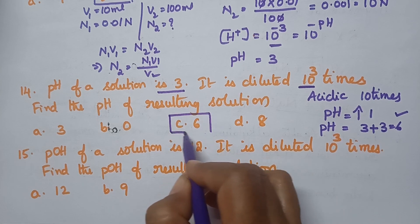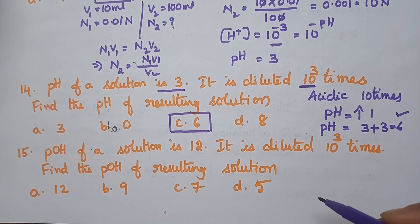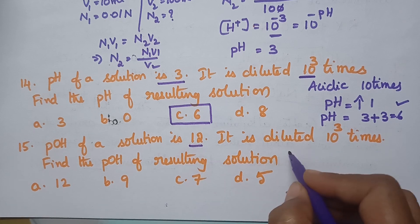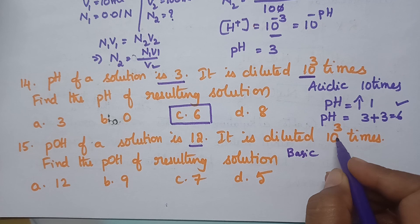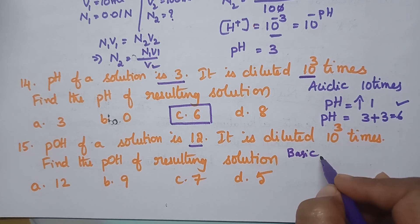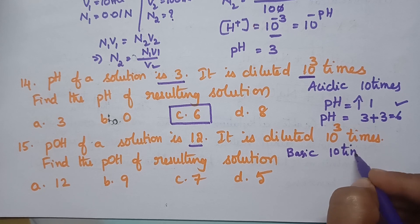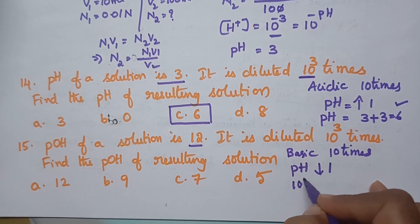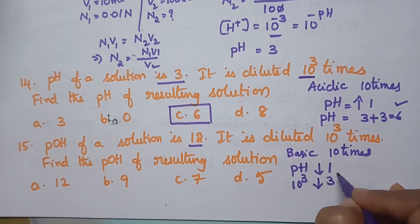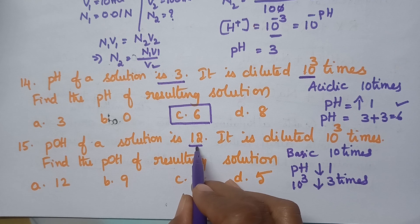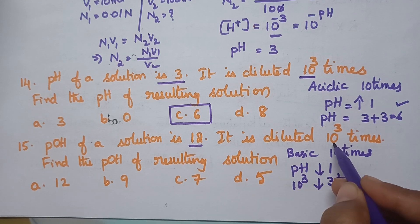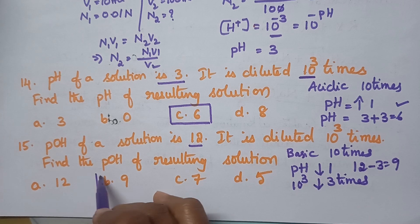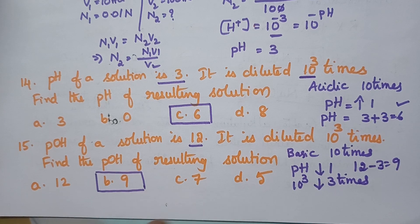The next question: the pH of a solution is 12, so it is a basic solution, and it is diluted 10³ times. For basic solutions, diluting by 10 times decreases the pH by 1, so diluting by 10³ times decreases the pH by 3. Therefore pH = 12 − 3 = 9. Option B, pH = 9, is the right answer.